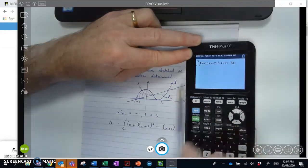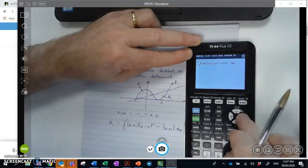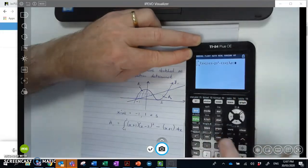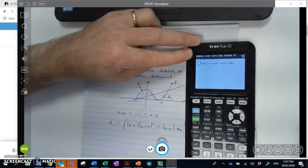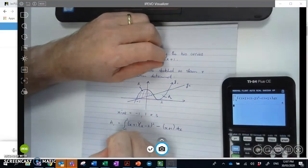And then my functions are... And just double checking. So x plus 1, x minus 2 all squared, minus x plus 1. I want that with respect to x. And I've got the bounds correct. So if I press enter there, you can see my area is 4 square units.